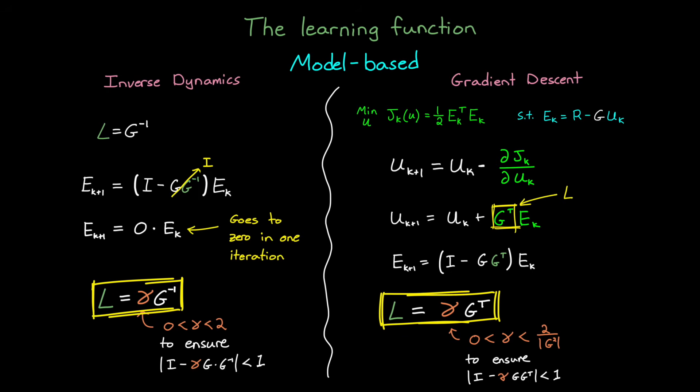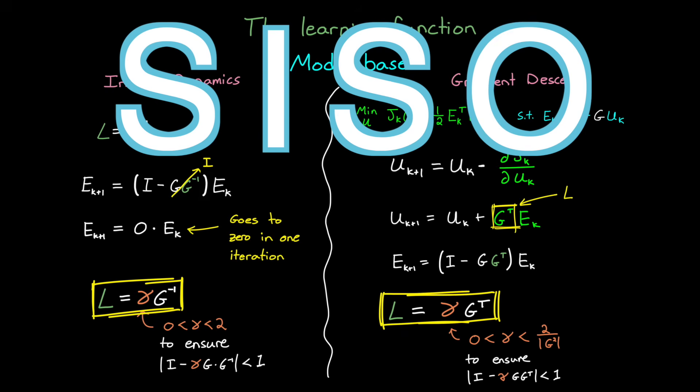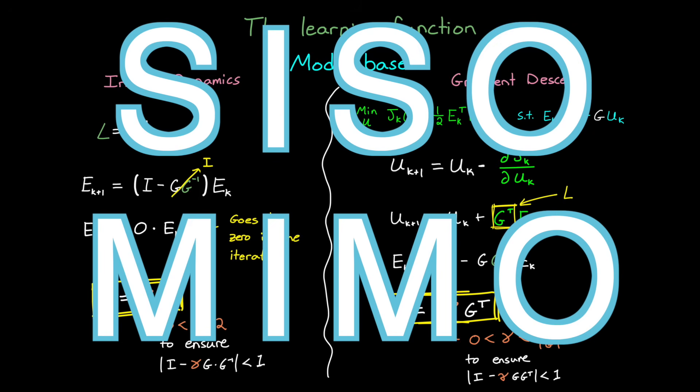Now, a downside of both of these methods is that they require a model of the system. We need to have that understanding of g, even if it's not a perfect representation. But the upside is that since we're dealing with matrices, they work for both single-input, single-output systems, as well as multi-input, multi-output systems. So they're very powerful approaches.